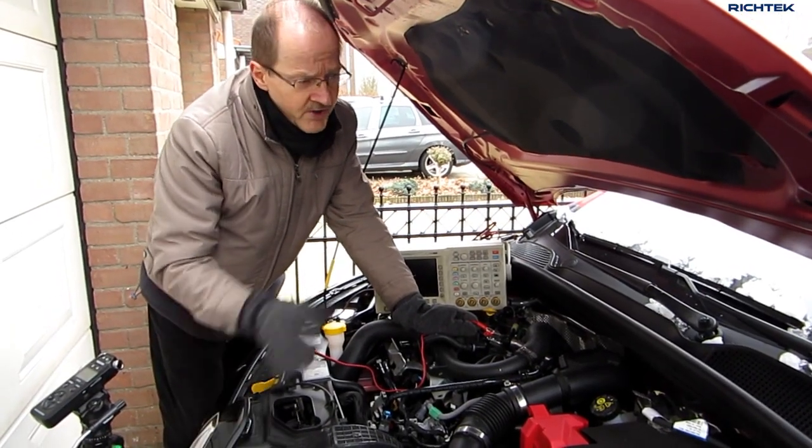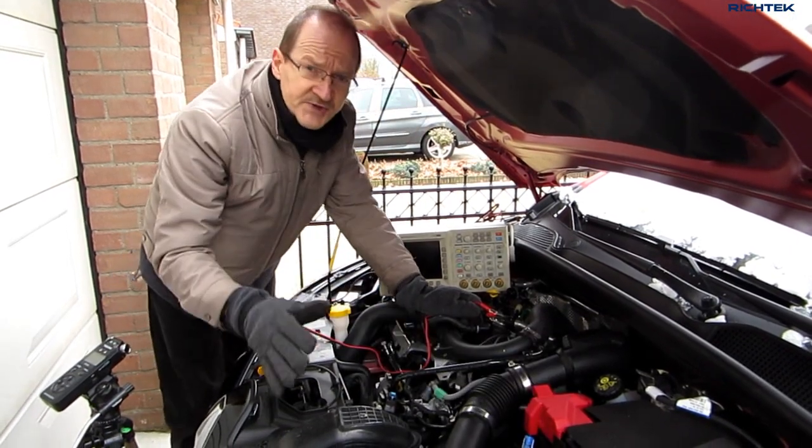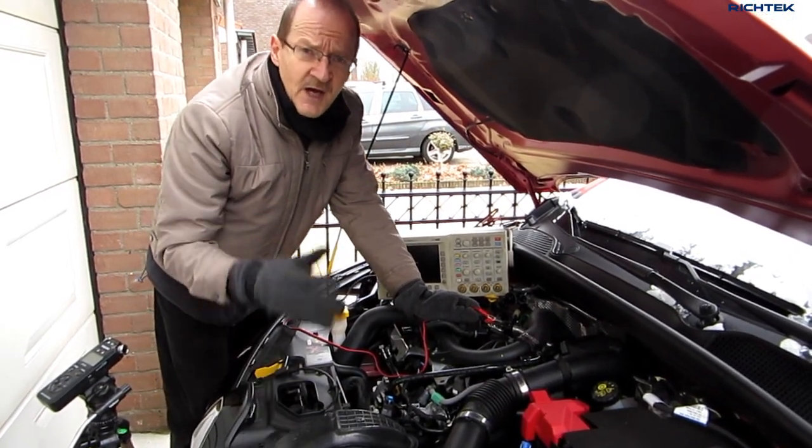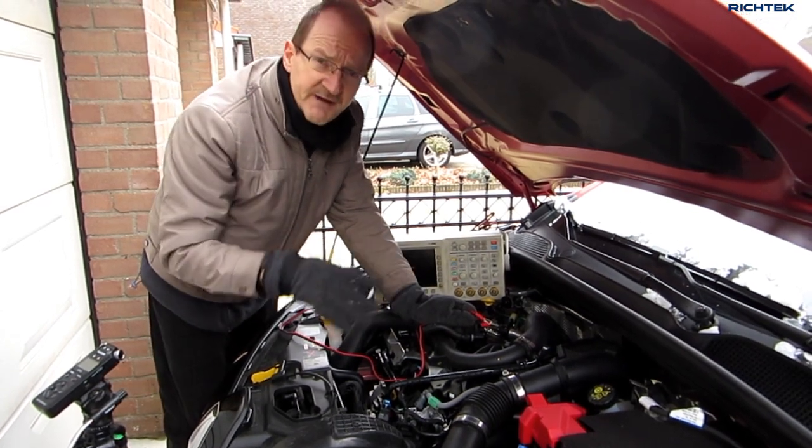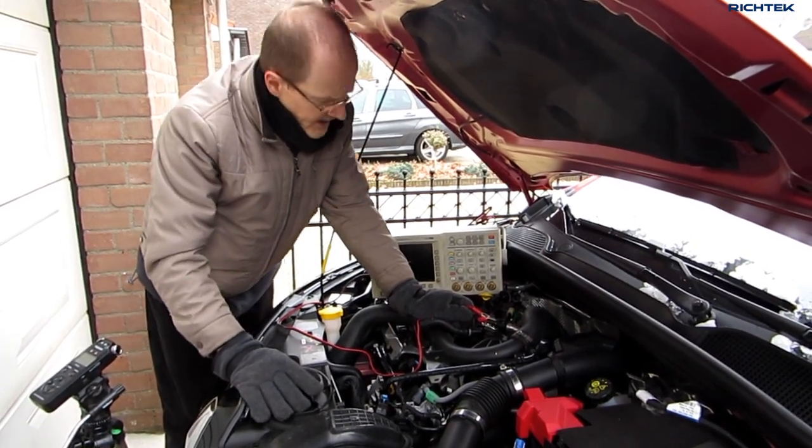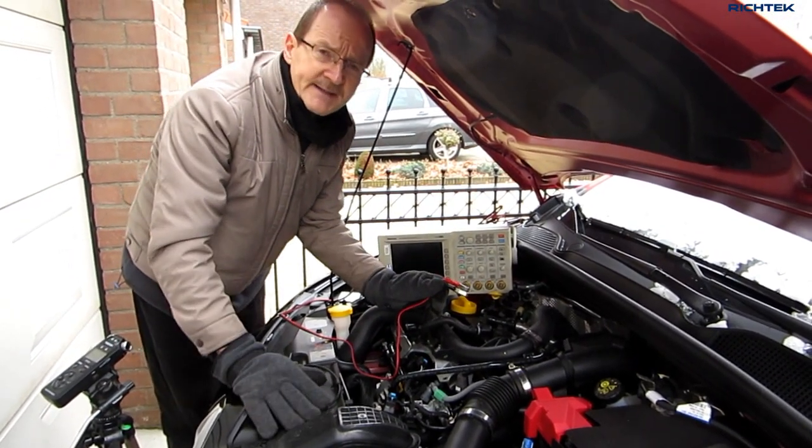As you probably know, the car electronics are powered by the battery. But this battery voltage is far from stable. Under certain conditions, especially cold weather, the battery voltage can fluctuate considerably. Let me hook up the oscilloscope to the battery voltage and show you what I mean.